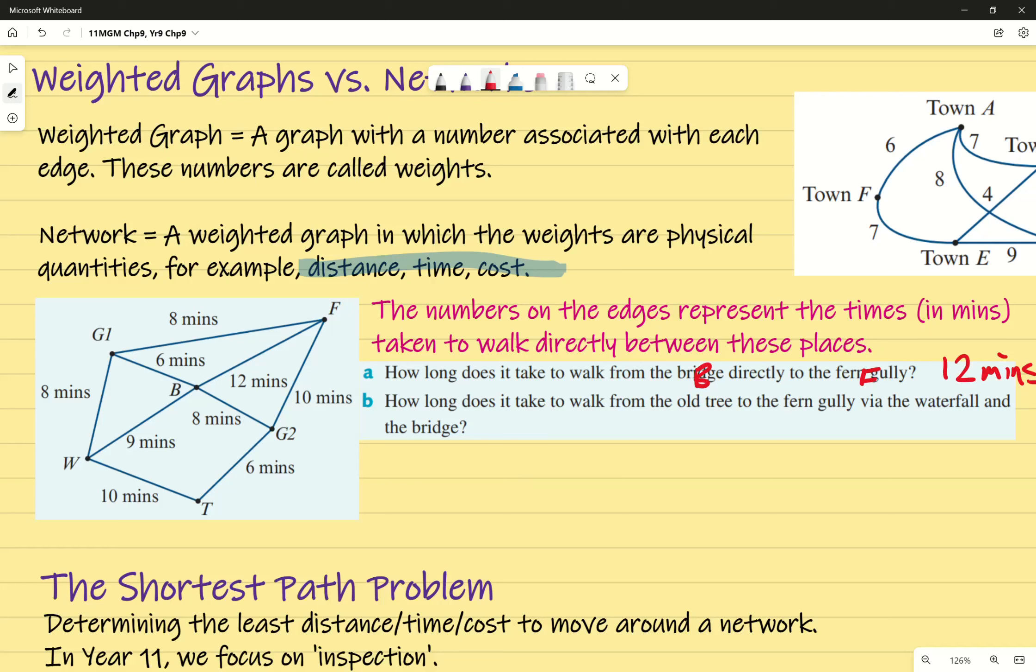Next one. How long does it take to walk from the old tree, which I'm going to say is T, to the fern gully, which is F, via the waterfall W, and the bridge B. So then we're taking a specific path. We're starting from the old tree T, walking to the fern gully via the waterfall, bridge, and then back to the fern gully. So that to me is going to be 10 minutes plus 9 minutes plus the 12 minutes, which gives me a total of 31 minutes. Any questions about that?